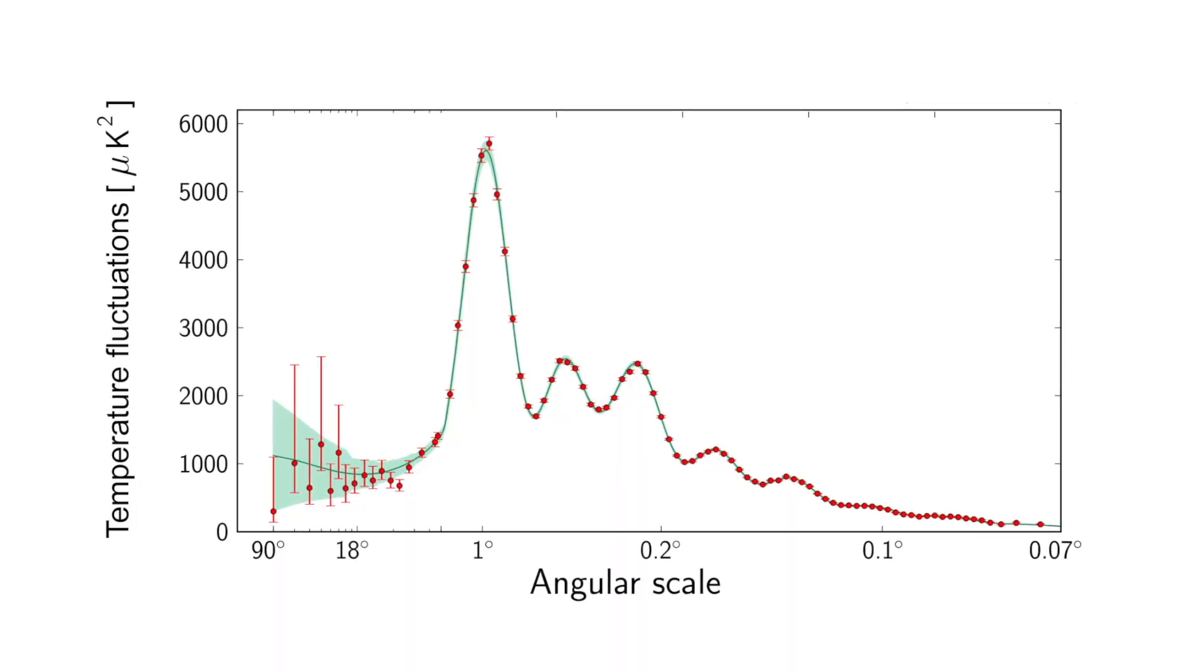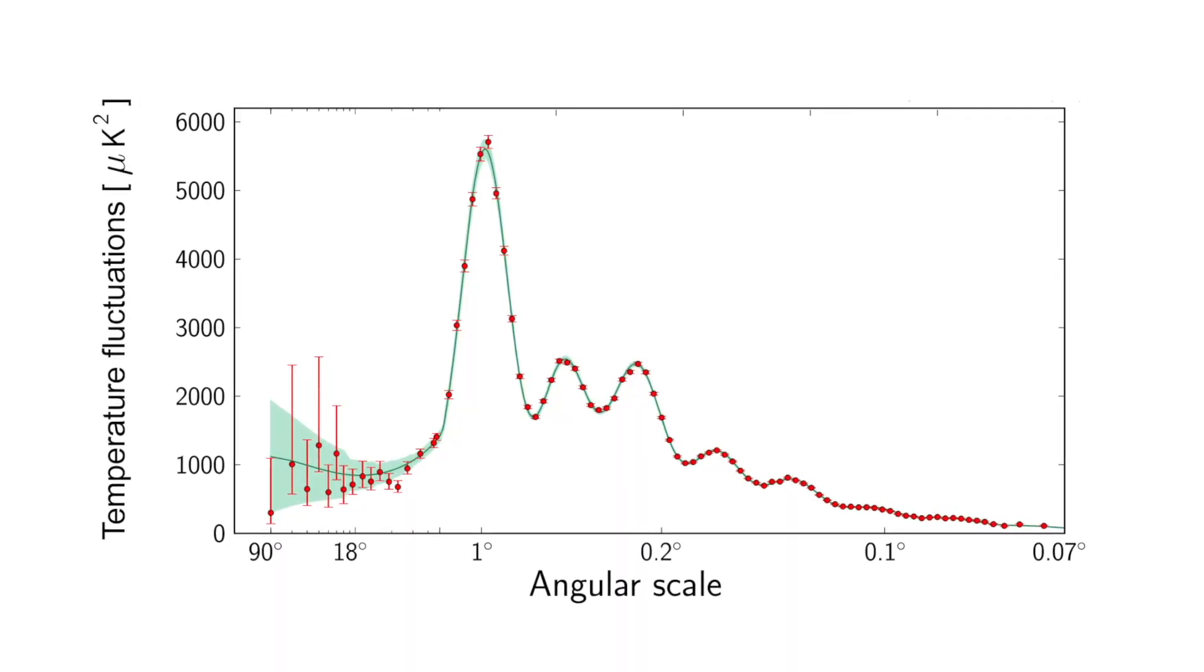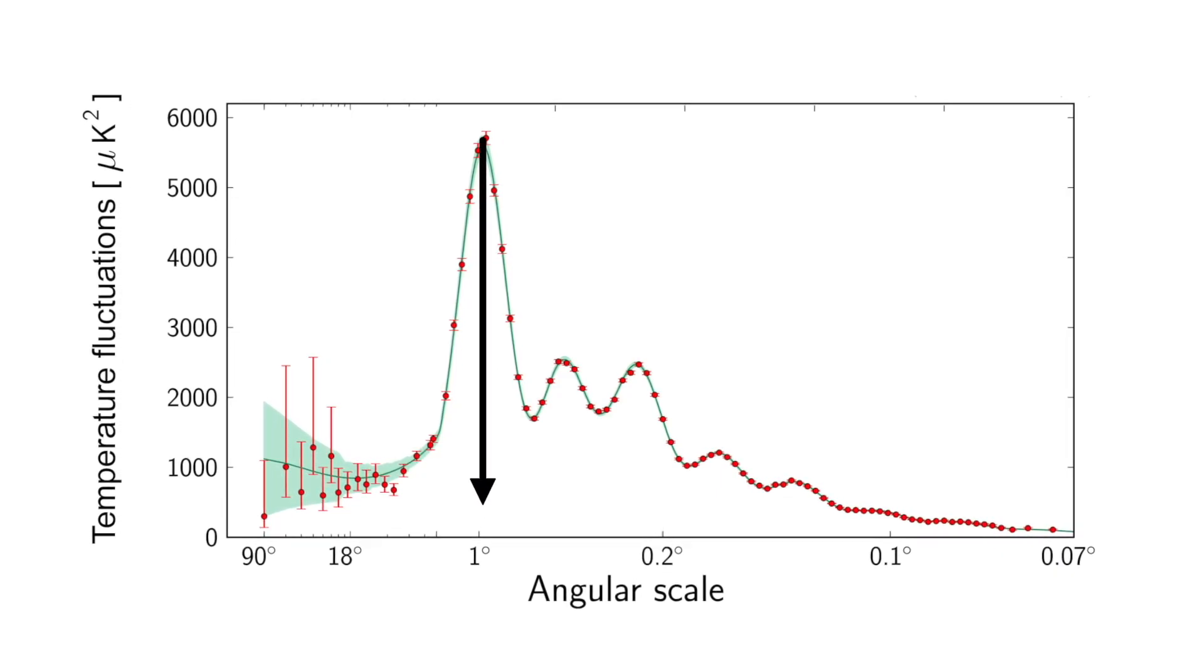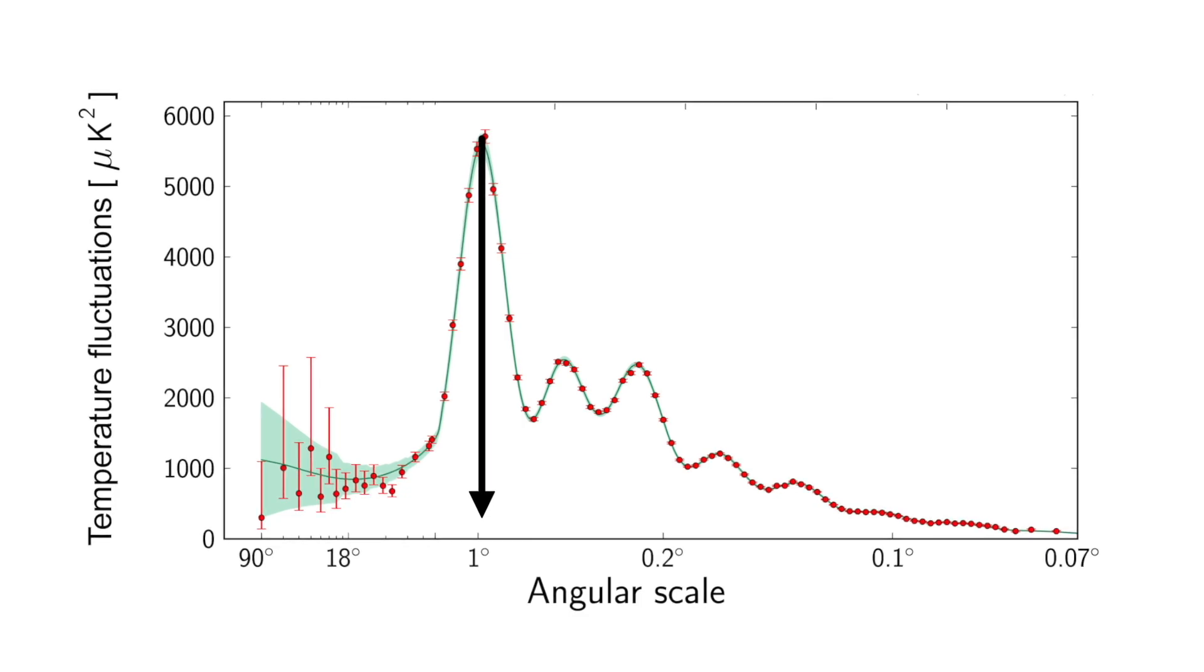We can see that here. The symbols are data and the line is a fit and the peak is at about one degree. So, that means that space is flat or nearly so.